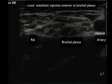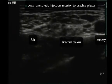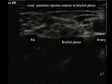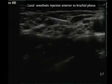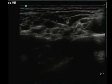At first, we observe the injection of local anesthetic solution at the anterior surface of the brachial plexus.